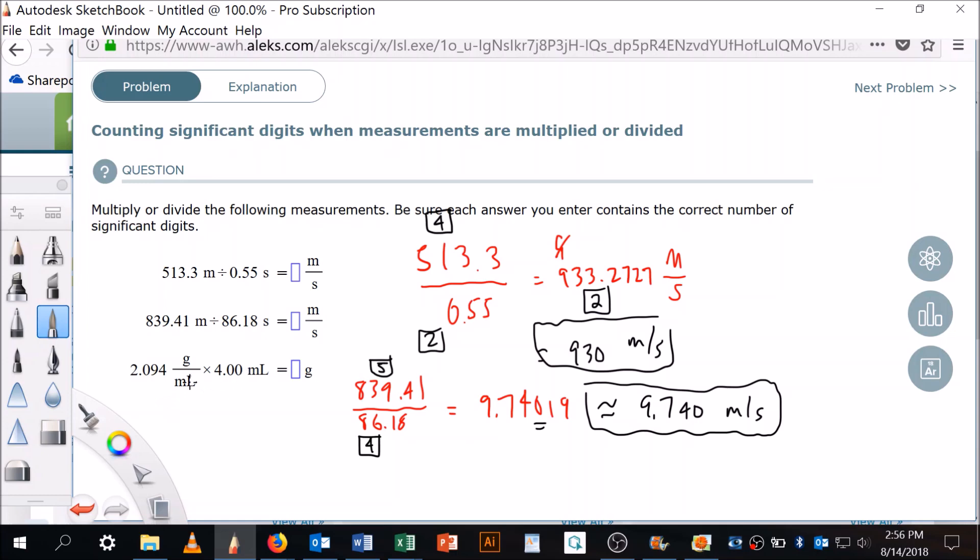Okay, and then finally a multiplication problem. Let's go back to red. 2.094 times 4.00, and it looks like these mills are going to cross out so it's going to be in grams. So, clear, 2.094 times 4.00 equals 8.376.